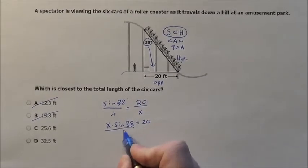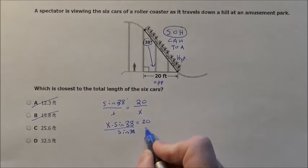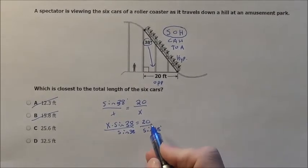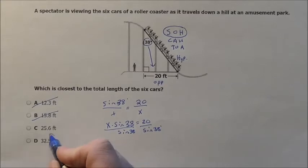And now I divide by the sine of 38. When I do 20 divided by the sine of 38, making sure my calculator is in degree mode, I'm going to get choice D, 32.5.